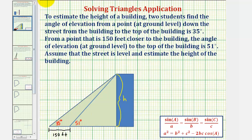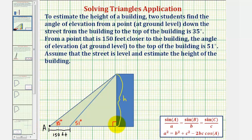Notice how we have two overlapping right triangles where this is the right angle. To keep things organized, let's label some of these vertices. We'll label this vertex A, this vertex B, and this vertex C.